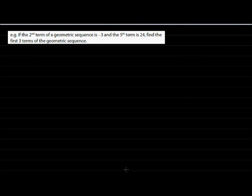I can hear you asking for more, so here we go. In this example, they give us the second term of the geometric sequence, which is negative 3, and the fifth term, which is 24, and they ask us to find the first three terms.